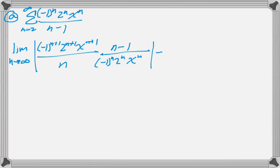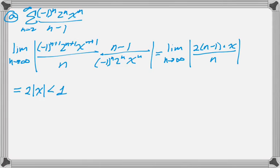Alright, so we do all the canceling that we can, and we're going to end up with this. There's a 2, an n minus 1, an x in the numerator, and then just an n in the denominator. So we take that limit, and we end up with 2 times the absolute value of x. We know that that needs to be less than 1 for it to converge on the open interval.